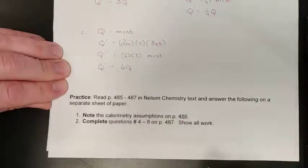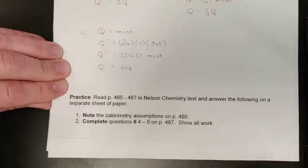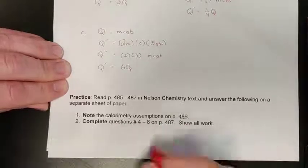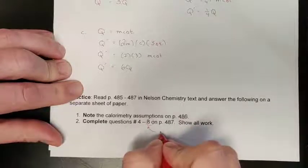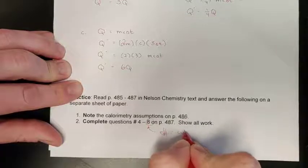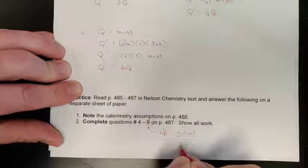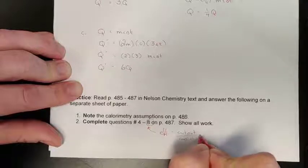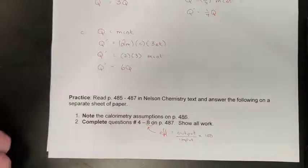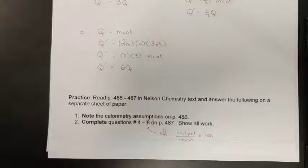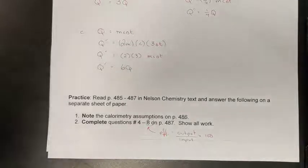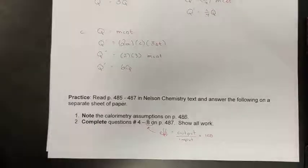Question number eight is an efficiency question. Just in case you don't remember that formula, your efficiency is always just equal to your output, usually of energy, versus the input of your energy times 100. Hopefully that will help you out with example number eight. All of the answers for all of those questions are found on D2L as the Chapter 11 solutions. Good luck with it. Practice that, and we'll see you in the next videos for the continuation of 11.2 in calorimetry.